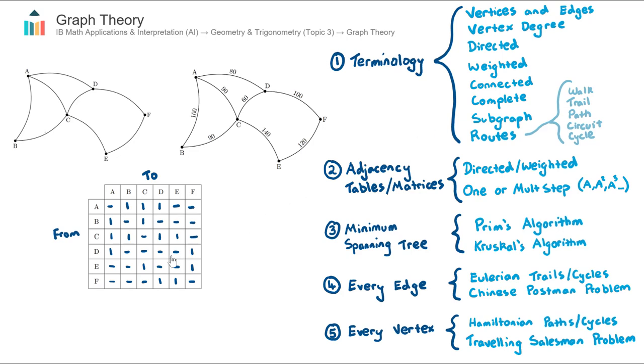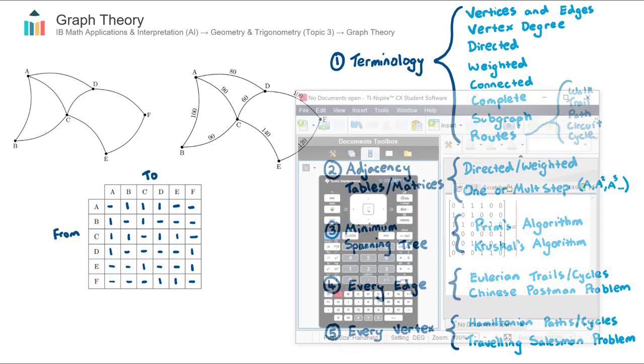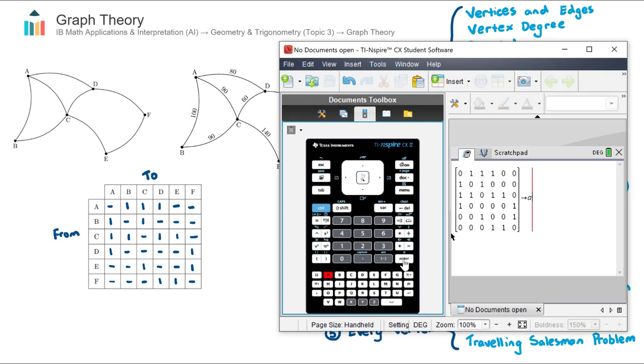And that's the completed graph there. I can then convert that to a matrix using my calculator. So that's the matrix there. Store it as a letter and hit enter. Now the benefit of that is currently this adjacency table and this adjacency matrix show all the direct routes. So can I traverse from B to C? Yes. Can I traverse from B to E? Currently, no.